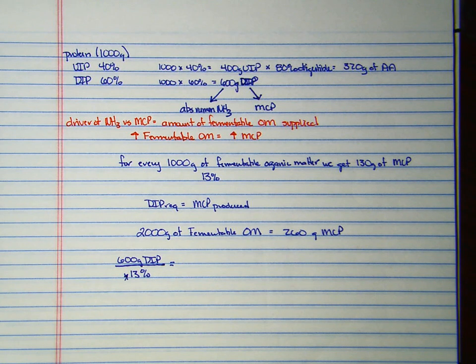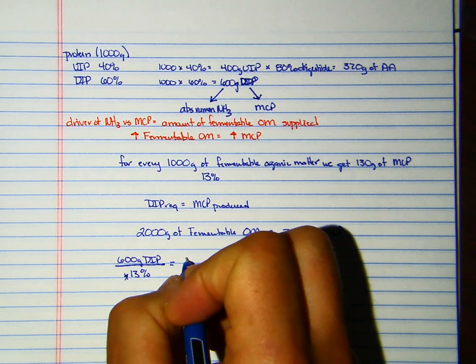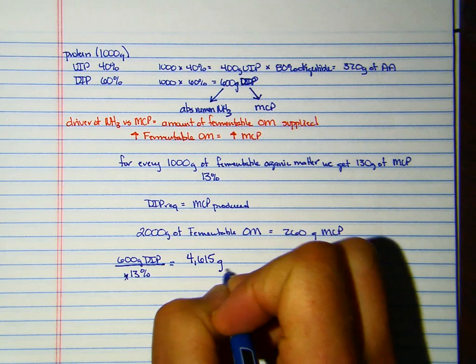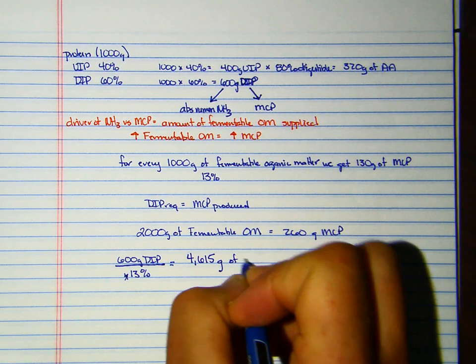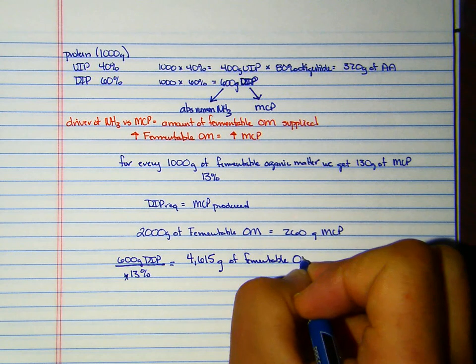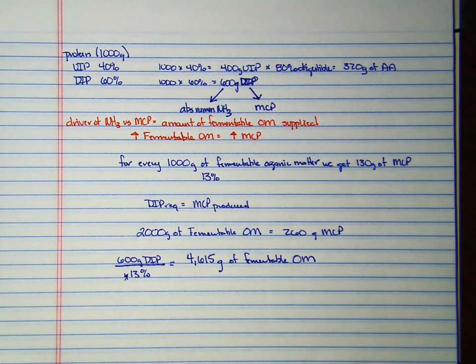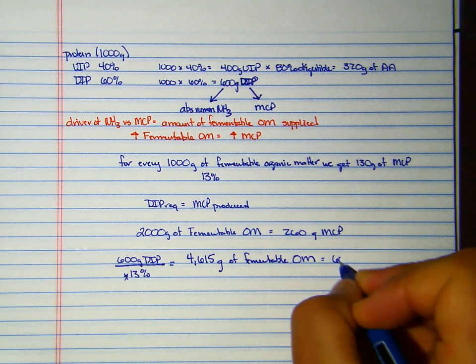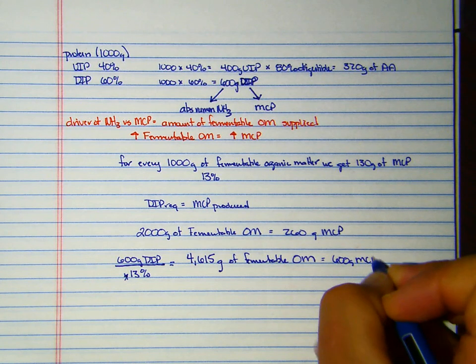600 divided by 0.13 means I could feed my cow 4,615 grams of fermentable organic matter and have it use it. And if I did that, I would get 600 grams of MCP.